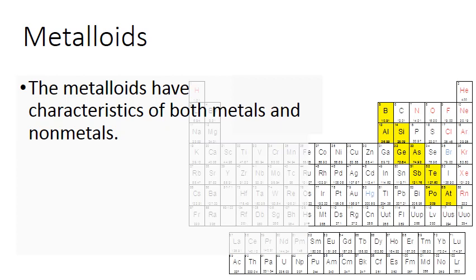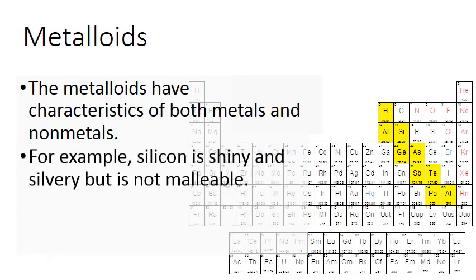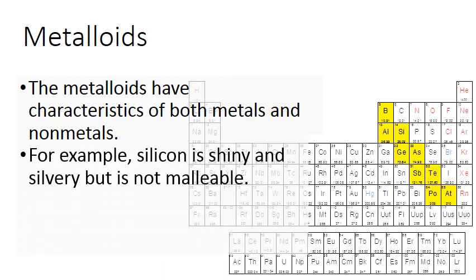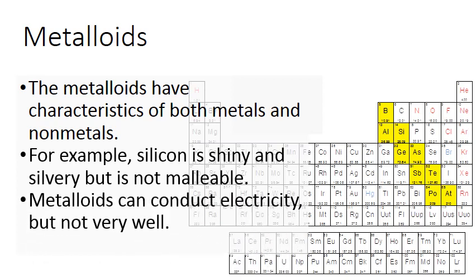And then the last group we have here is the metalloids. And the metalloids have characteristics of both metals and nonmetals. So they're kind of similar to metals, kind of similar to nonmetals. For example, silicon is shiny and silvery, but it is not malleable. You can't really hammer it out. Metalloids can conduct electricity, but not always very well.